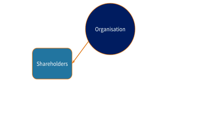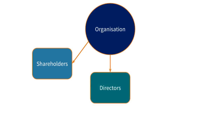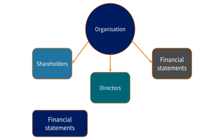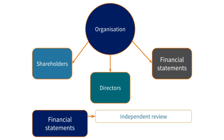An organisation has shareholders who invest money into the company, and directors who are responsible for looking after that investment and reporting on how the company is performing. The financial statements are prepared by the directors so the shareholders and other users can see how their investment is doing. In order for shareholders to feel reassured that the information is prepared properly, it is reviewed by an independent party on their behalf — the external auditor.